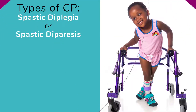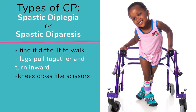If the muscle stiffness is more in the legs, with the arms less affected or not at all, doctors describe it as spastic diplegia or spastic diparesis. Individuals with this type of spastic CP may find it difficult to walk, as their tight leg and hip muscles make their legs pull together and turn inward, and their knees cross like scissors.